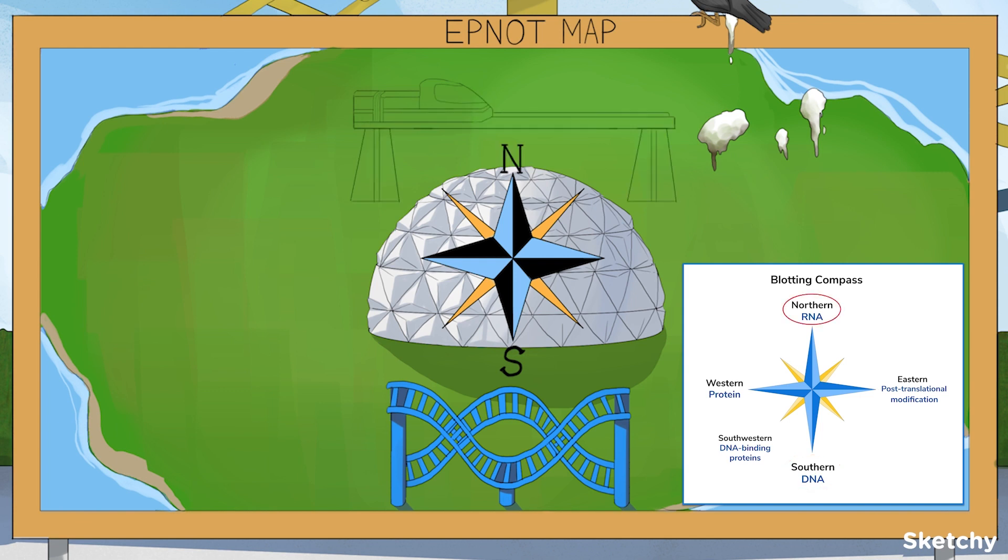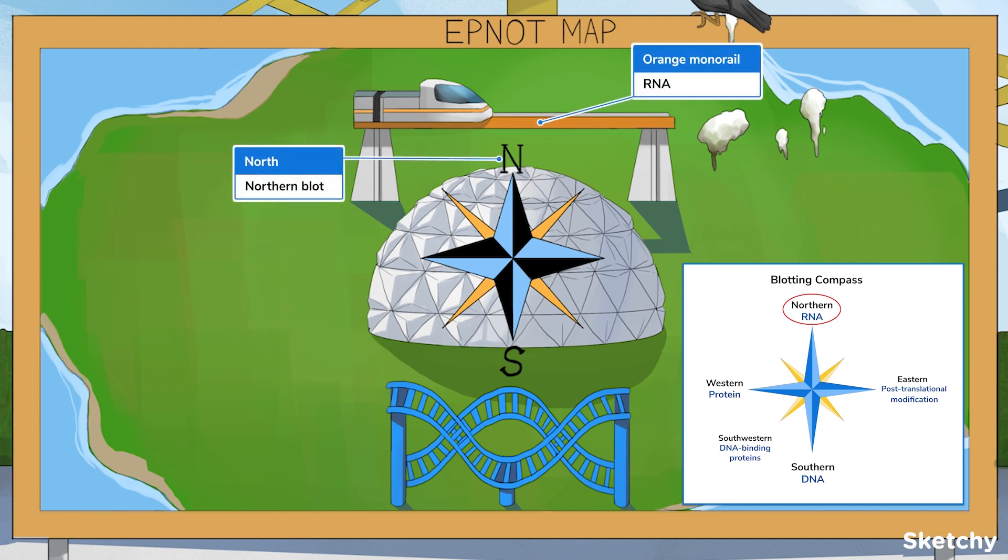Next is the Northern blot, which was developed by Sandra Northern. Nah, only kidding. It's just called Northern blot because the first one was called Southern. Northern blots identify unique RNA sequences. They're especially helpful for quantifying levels of gene expression. Up north is Epnaut's orange monorail, our recurring symbol for RNA.